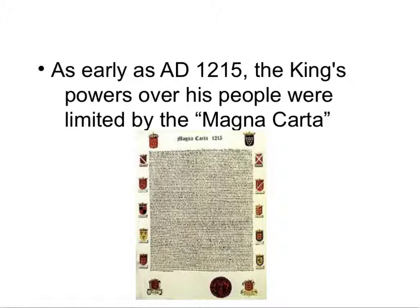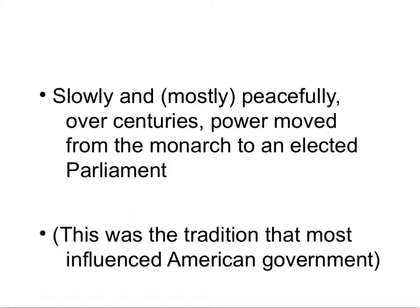The Magna Carta is a very important document in the evolution of Western governments. It still offered the king a lot of powers, but restricted the king from being completely arbitrary — from doing whatever he wanted. Over time, and mostly peacefully, although there was a civil war once in a while and even a regicide — the killing of the king, which happened to Charles I — the government shifted slowly and steadily from a unitary monarchy to a constitutional monarchy, where the Prime Minister holds power. This slow and steady transformation was the tradition that the American government kind of sprung from.